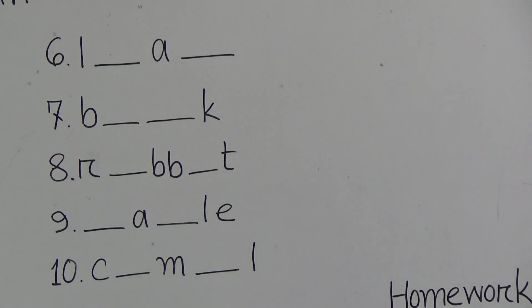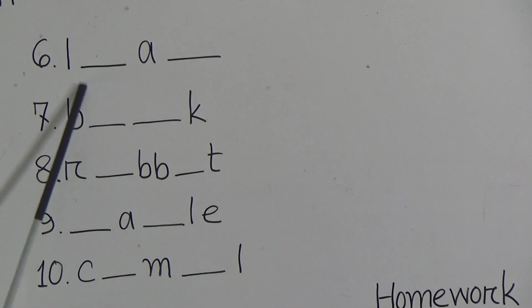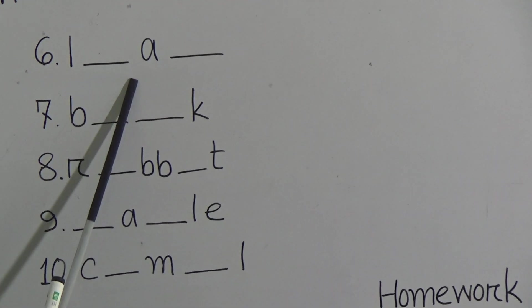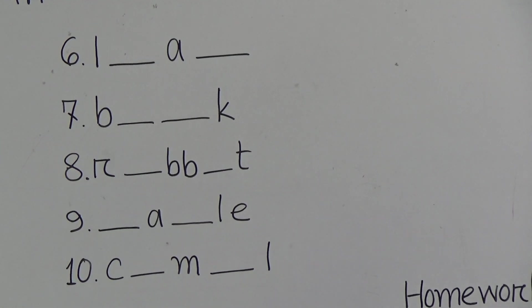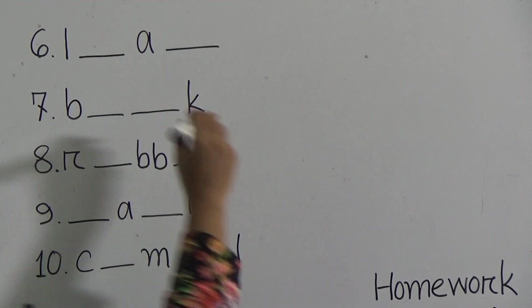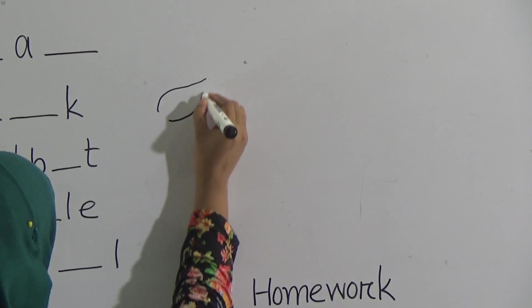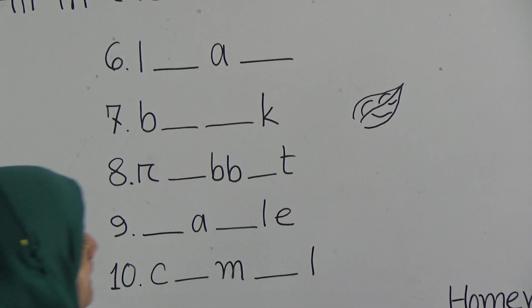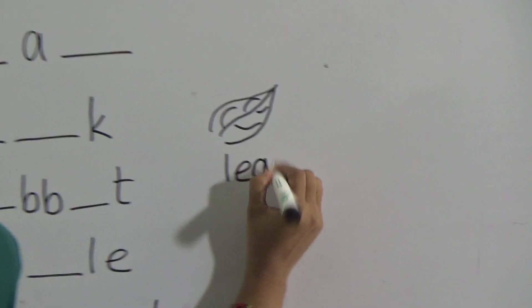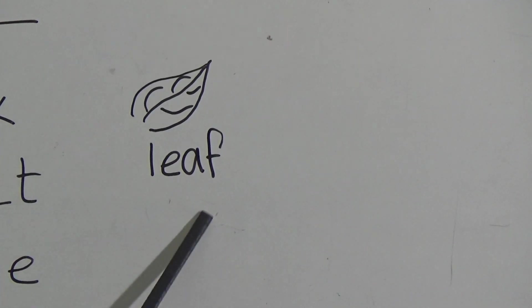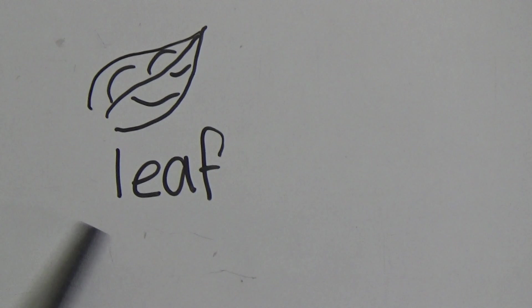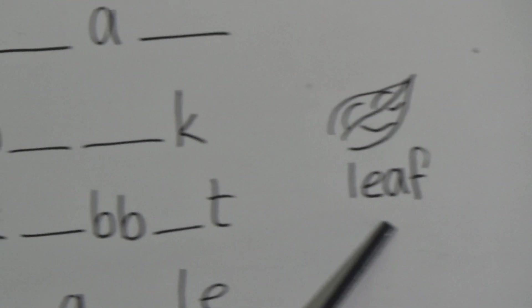Students, first one. Look, number six: L gap A gap F. Students, can you guess what is this? Can you fill the gaps? Can you guess what will be the word? Look, can you guess what this is? This is leaf. Students, I hope you can guess the word. This is leaf, a part of a tree. I'm repeating, this is a part of the tree and the word is leaf.